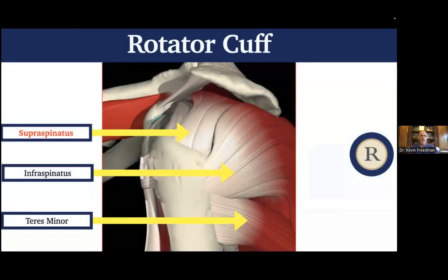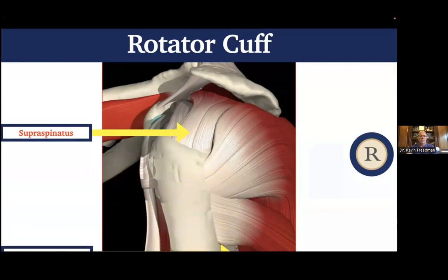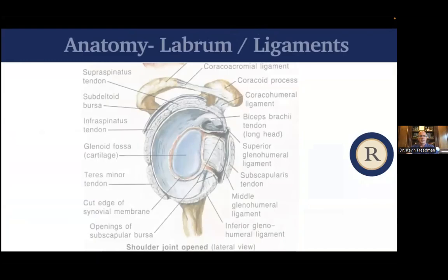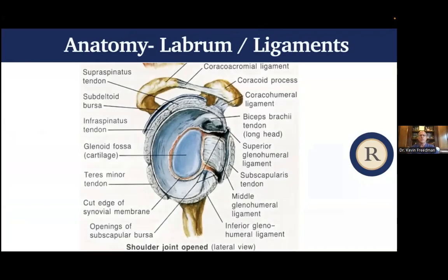Over the top and back of the shoulder are the three other rotator cuff muscles: the supraspinatus on top, and then the infraspinatus and teres minor further around the back. The most common rotator cuff tendon to be injured is the supraspinatus. Underneath that are the ligaments and what's called the labrum — the cartilage ring. The ligaments attach to that cartilage ring and can also be injured along with other shoulder problems.